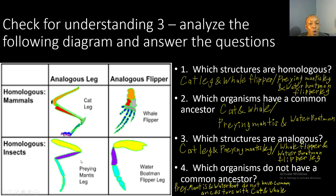Number three — which structures are analogous? The cat leg and praying mantis leg are analogous: similar function (walking) but different structures. The whale flipper and water boatman flipper are also analogous — different structures but the same function (swimming). Number four — which organisms do not share a common ancestor? The praying mantis and water boatman do not share a common ancestor with the cat and the whale, since the cat and whale have homologous structures with each other, and the praying mantis and water boatman have homologous structures with each other.